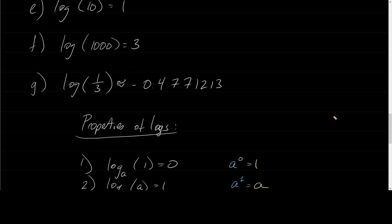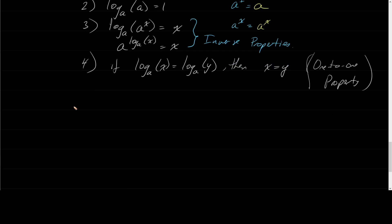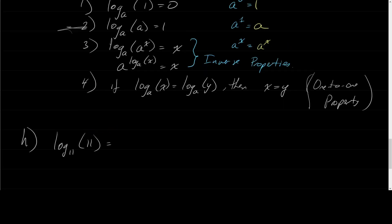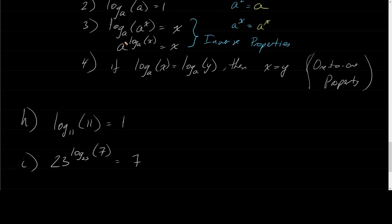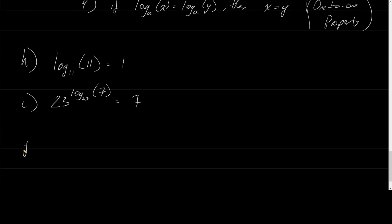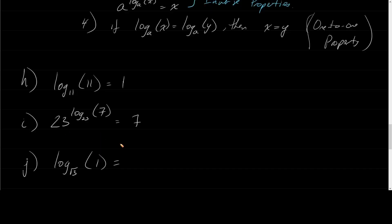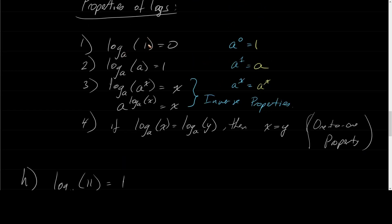Let's get some examples in. Let's say I have log base 11 of 11. Well, from the property log base a of a equals 1, it's equal to 1. Let's say I have 23 raised to log base 23 of 7 — that would just be equal to 7 because of the inverse property. And log base square-root-of-3 of 1 — well, from the very first property, it doesn't matter what the base is: if I have 1 inside, I get 0.